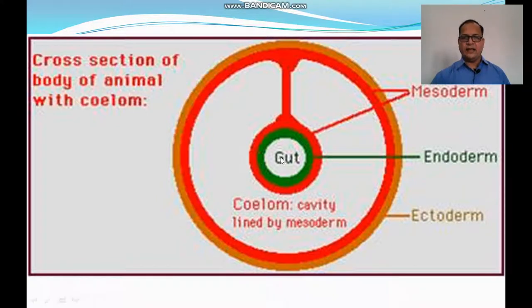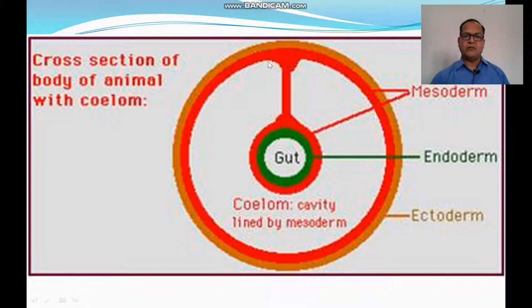The gut is surrounded by the endoderm, and the endoderm is surrounded by the inner mesoderm; then the Coelom or body cavity, and the body cavity is surrounded outerly by the outer mesoderm and then the ectoderm.